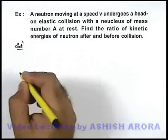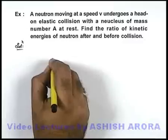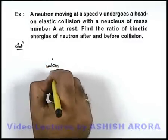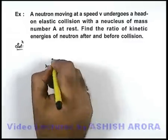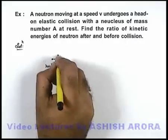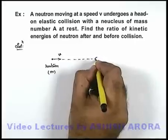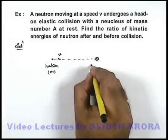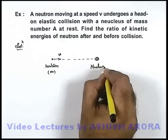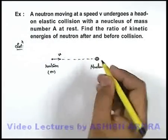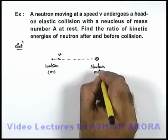Now, let's first analyze the situation. We are having a neutron. Let us consider it is having a mass m. It is moving at a speed v. It undergoes a head-on elastic collision with a nucleus which is of mass number A. If its mass number is A, we can consider its approximate mass to be mA.